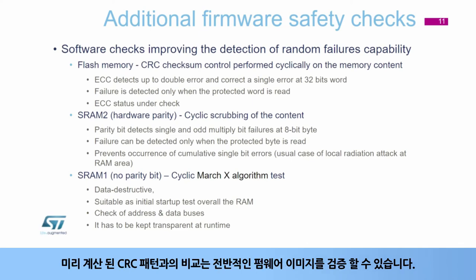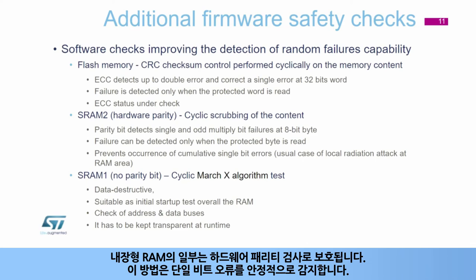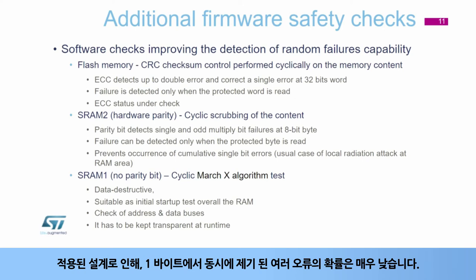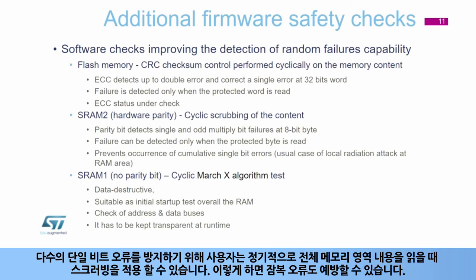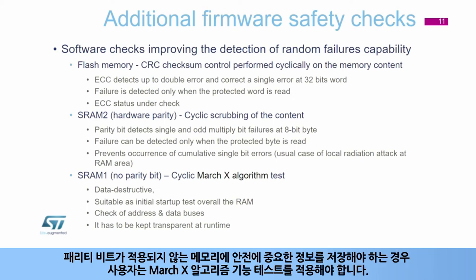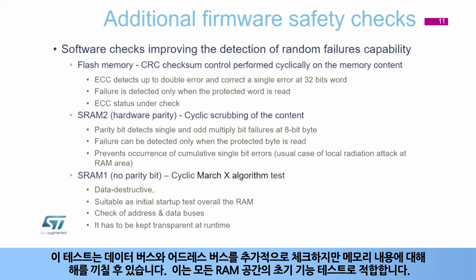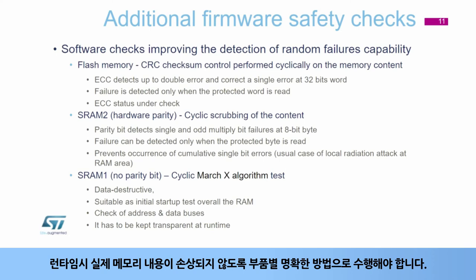A comparison with a pre-calculated CRC pattern can then verify the overall firmware image. Part of the embedded RAM is covered by a hardware parity check, which reliably detects single bit errors. Due to the applied design, the probability of multiple errors raised contemporarily at a single byte is very low. To prevent multiple single bit errors, the user can apply scrubbing when the overall memory area content is read out at regular intervals, preventing latent faults as well. If memory where no parity bit is applied needs to store safety-critical information, the user should apply a MarchX algorithm functional test. This test additionally checks the data and address buses, but it is destructive towards the memory content. It is suitable as an initial functional test of all RAM space. At runtime, it has to be done in parts and in a transparent way to prevent corruption of the actual memory content.